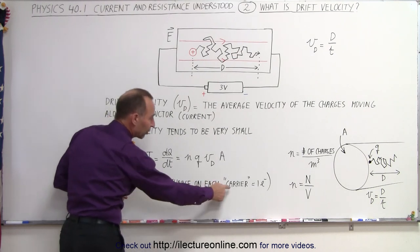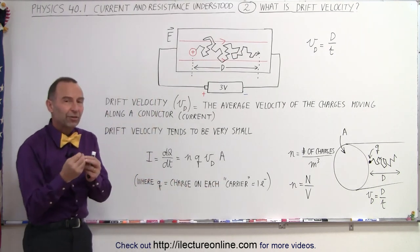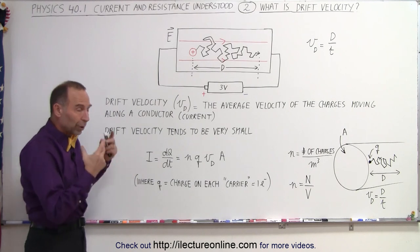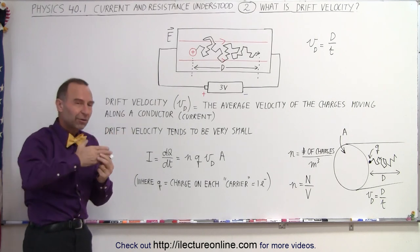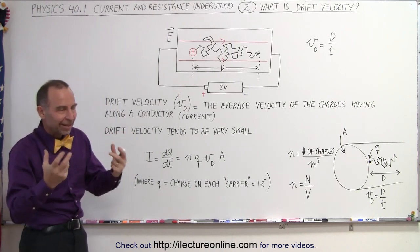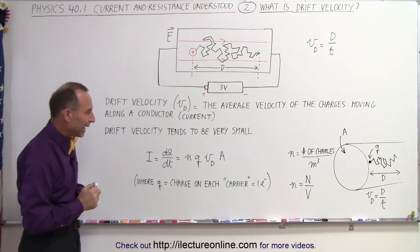But of course q, called the charge carrier, will be equal to the value of a single electron, even though we think of it as positive charges. Electrons have the same amount of charge; one is positive, the other one is negative.